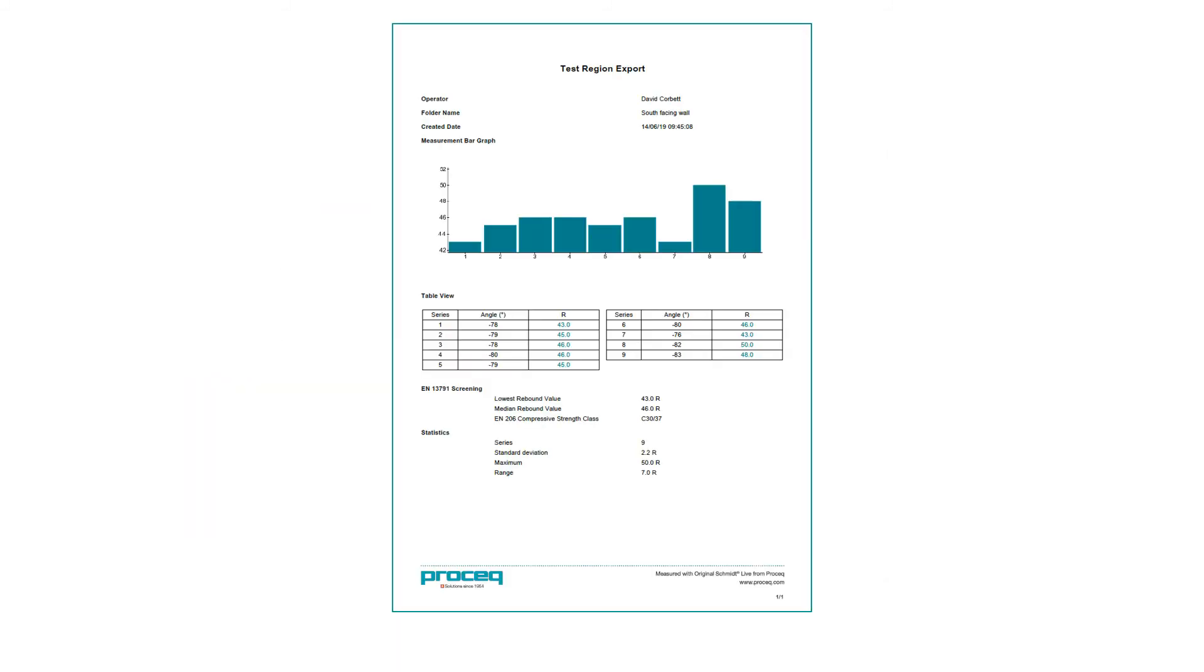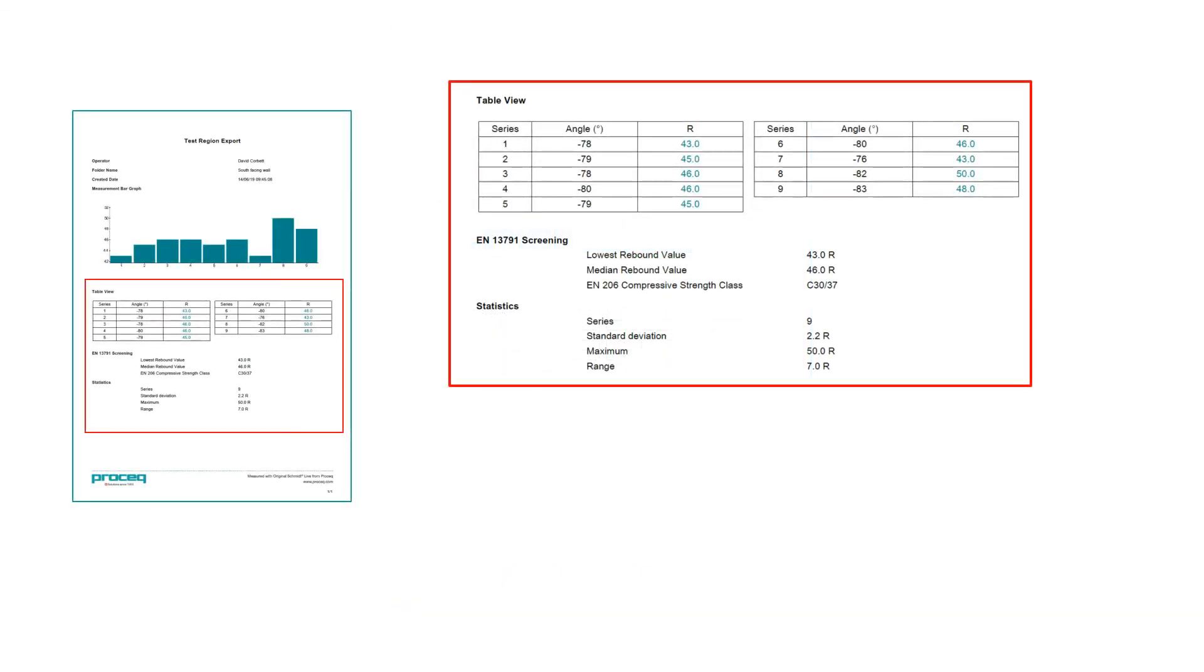Here we can see an example of the test report. Let's zoom in and have a look. As you can see, the app has identified the lowest rebound value, calculated the median for the entire test region, and assigned the compressive strength class. So a complete test report in practically no time.